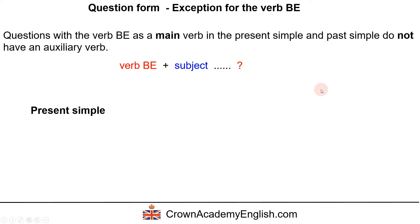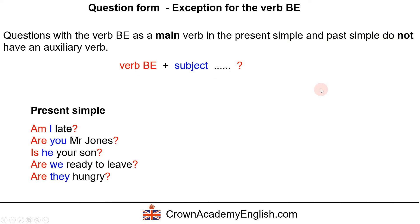In the present simple we can say: 'Am I late?' 'Are you Mr. Jones?' 'Is he your son?' 'Are we ready to leave?' 'Are they hungry?' The verb 'be' is highlighted, and the subject follows it.